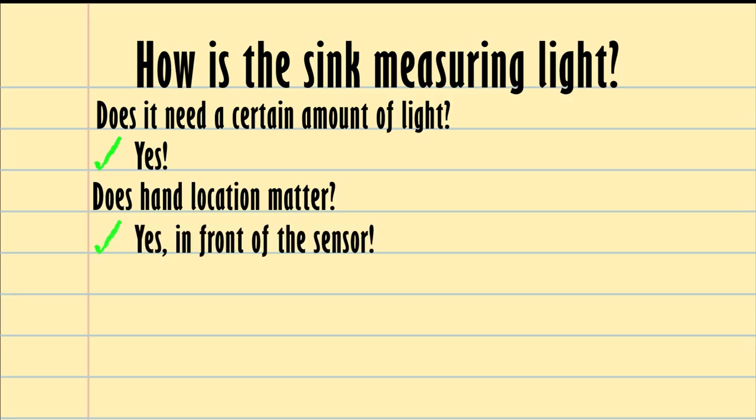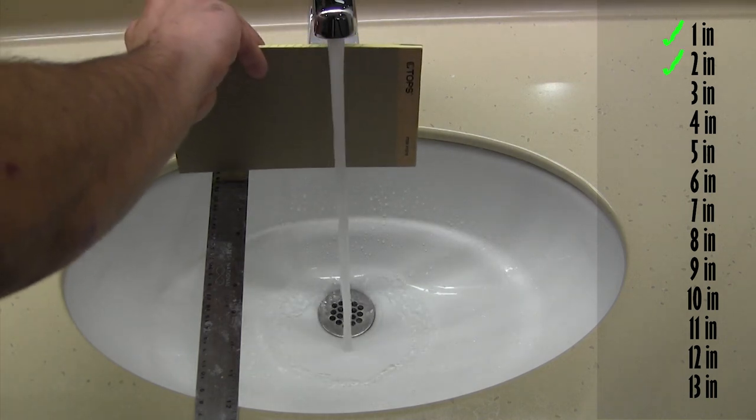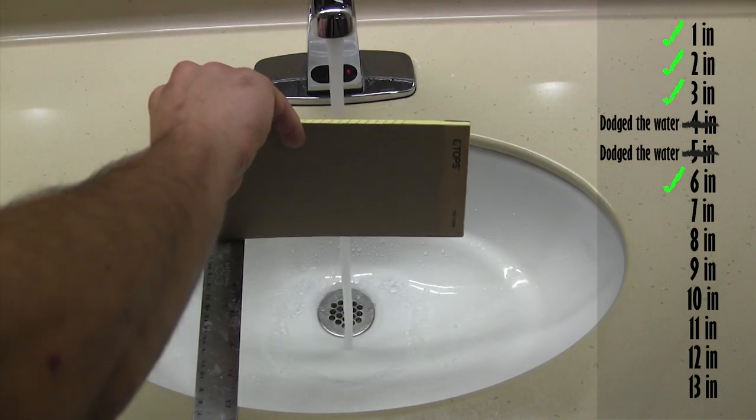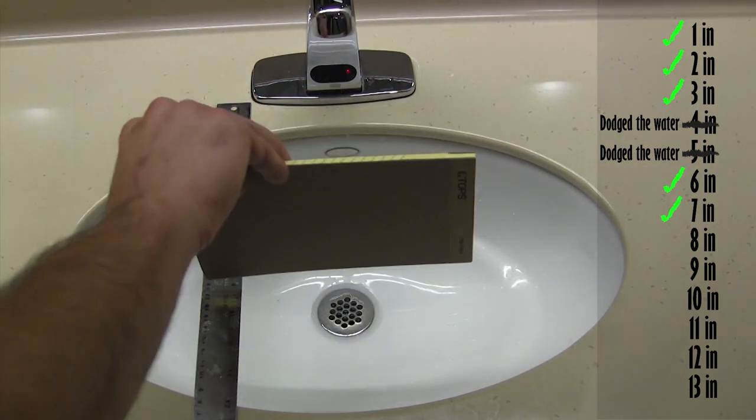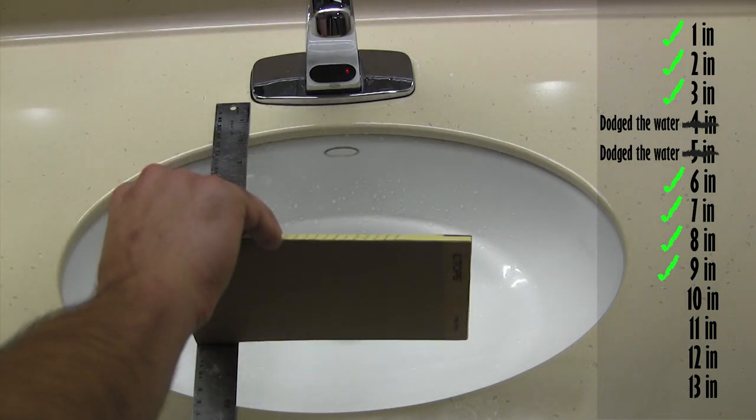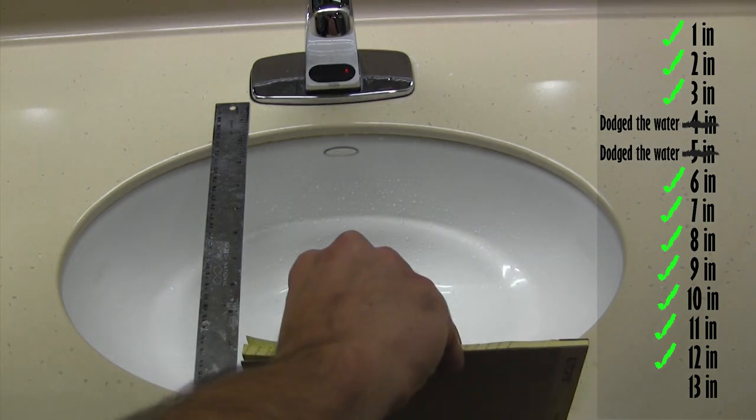Great! With knowledge of the best place to put our hands, does the hand distance matter? I took a notepad and a ruler and checked that the sink would turn on at different distances. All the way from one to twelve inches, the sink turned on, but once the notepad was more than twelve inches away, the sink didn't turn on. And this makes total sense because we wouldn't want the sink to turn on unless our hands were in the area of the sink bowl.